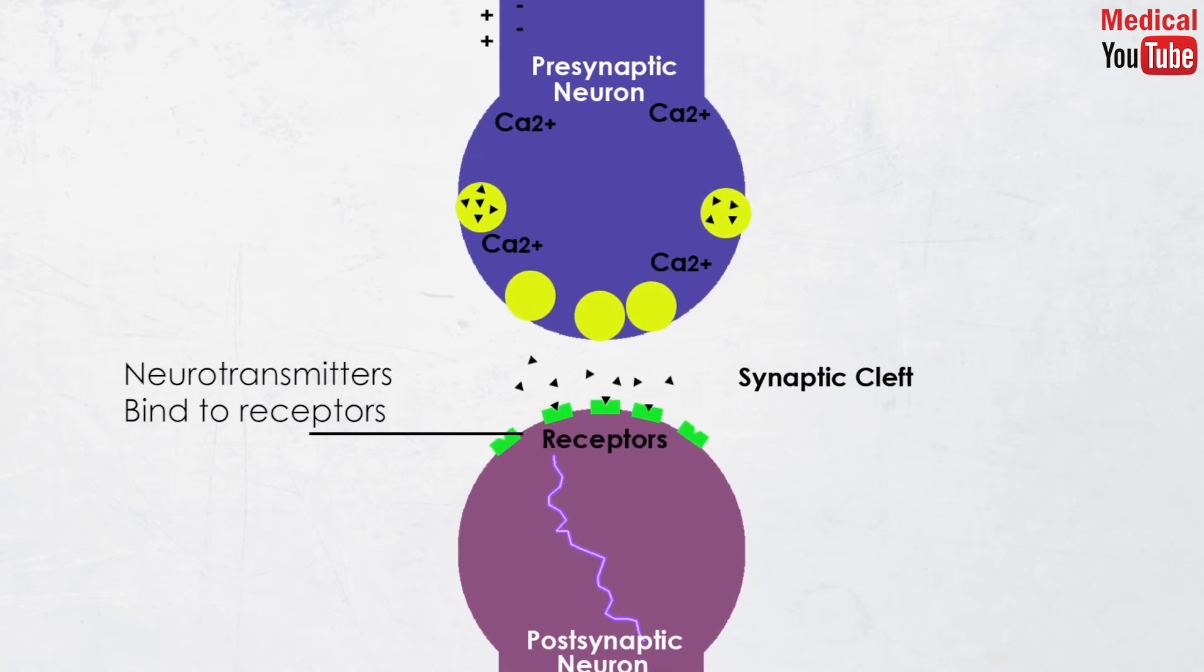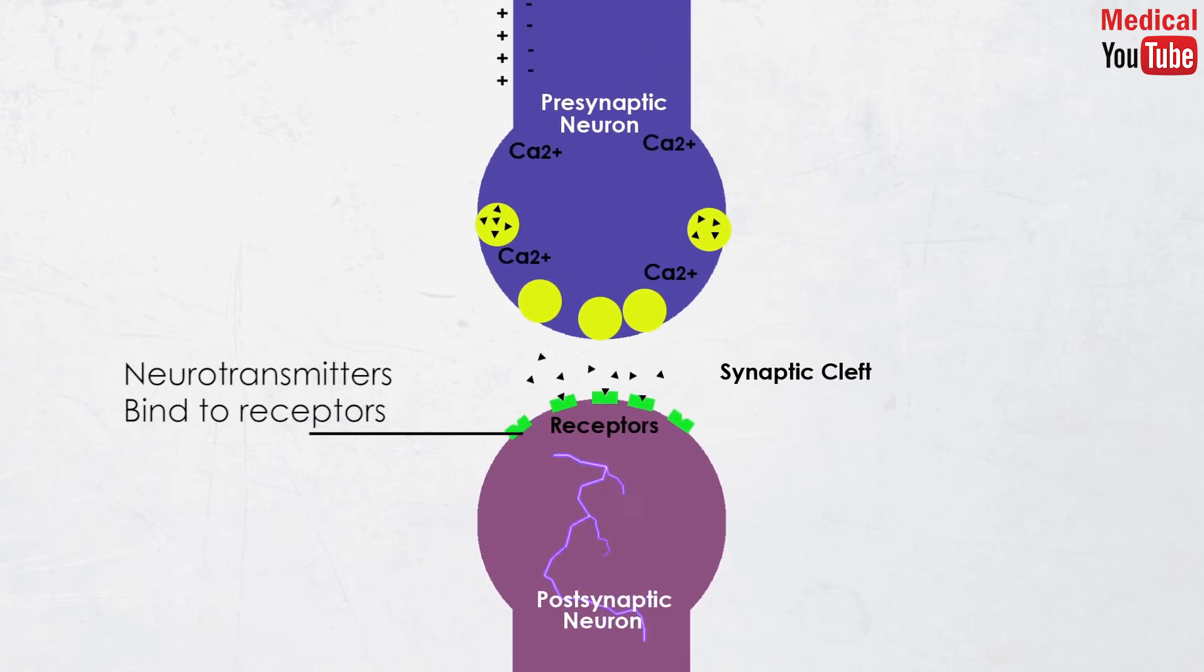This leads to changes in the permeability of the cell membrane of the effector organ that leads to initiation of a response in the effector organ. Then comes the last step which is the termination of the neurotransmitter response.